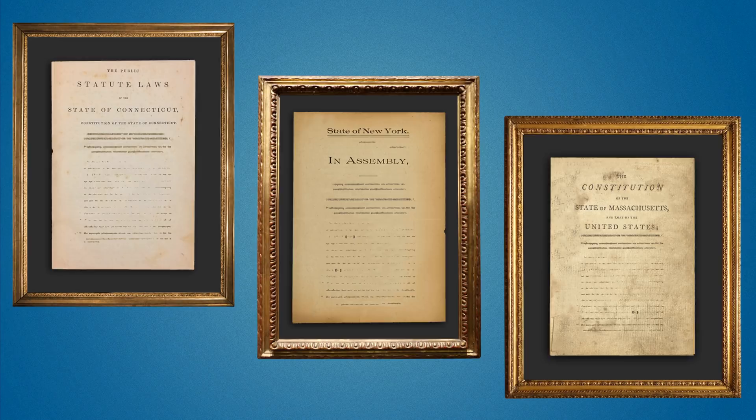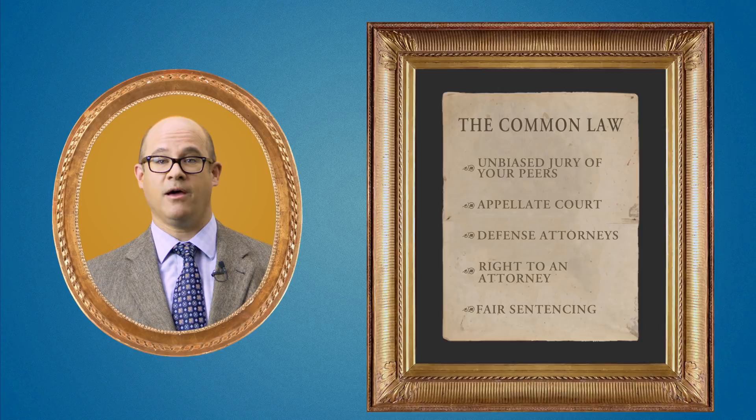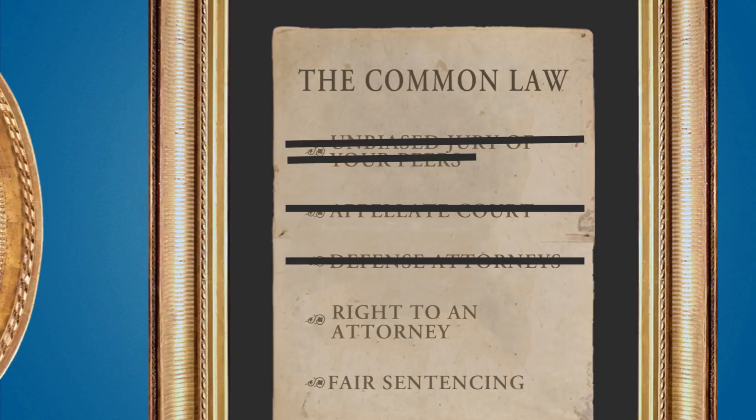The idea that juries can and should make legal determinations is actually written into the very text of a number of state constitutions. It was central to the founding era conception of what a jury was. At common law, we had a very different system — we didn't have elected prosecutors, we couldn't elect the king, and the jury was a jury of your peers in the sense of landed gentry white men. We also didn't have appeals.